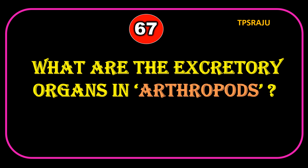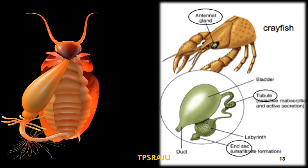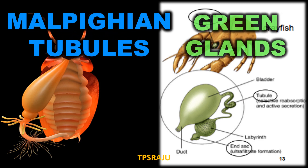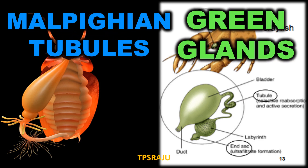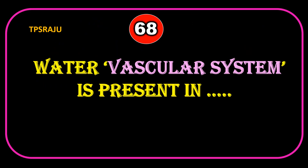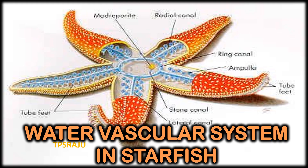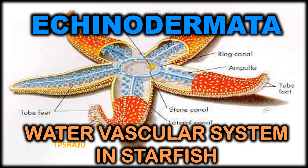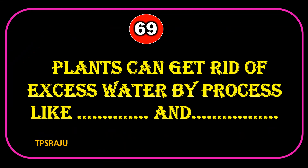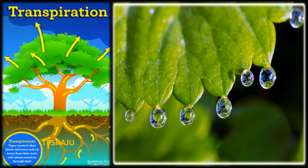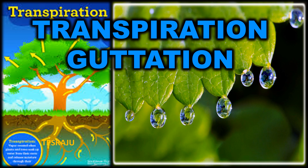What are the excretory organs in Arthropods? Malpighian tubules and green glands.